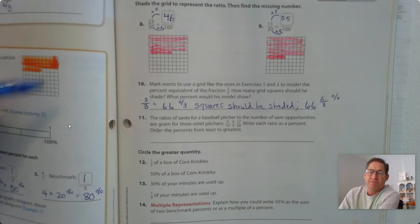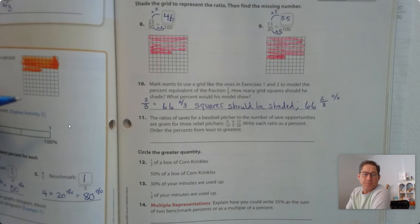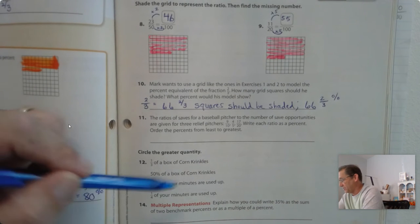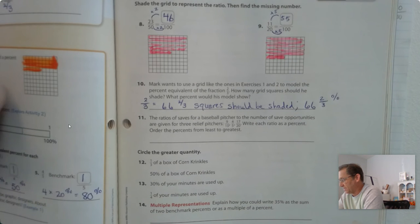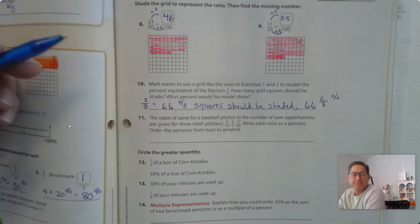Number 11. The ratio of saves for a baseball pitcher to the number of save opportunities are given for three relief pitchers: 9 tenths, 4 fifths, and 17 20ths. Write each ratio as a percent, and order the percents from least to greatest.